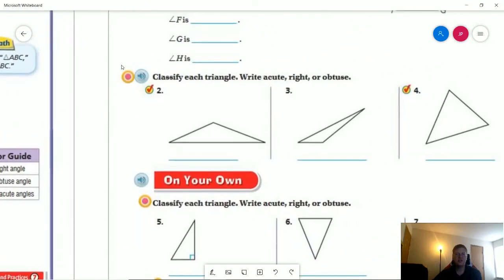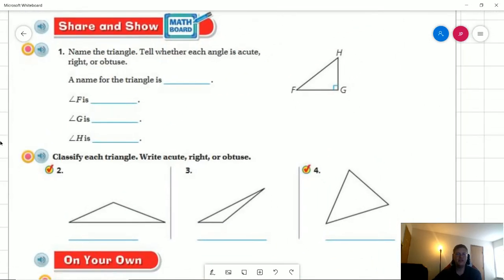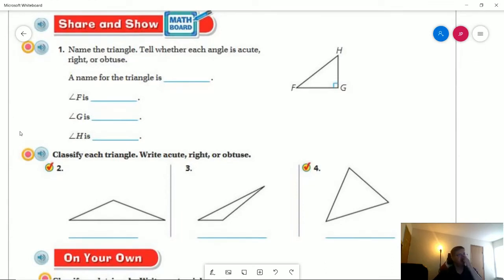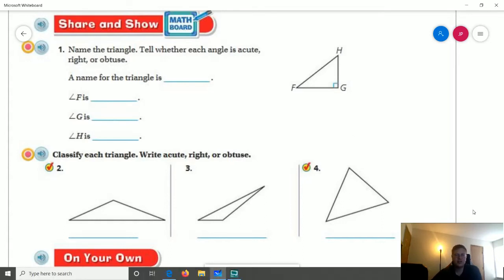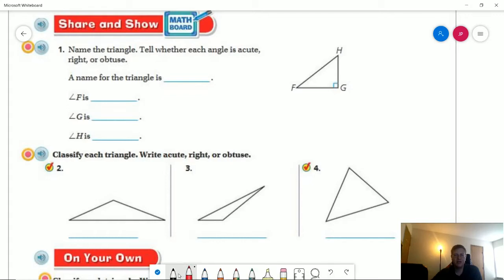All right. So now let's go to our odd numbers for our share and show. So the name for the triangle is going to be acute, right, or obtuse. So here we have our little marking. That's a square that shows that it is a right angle. So for that, the name for the triangle is going to be a right triangle.